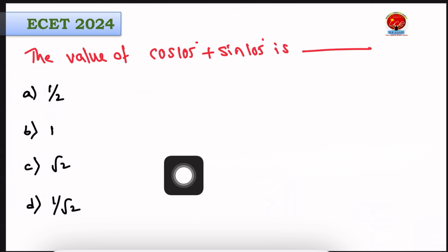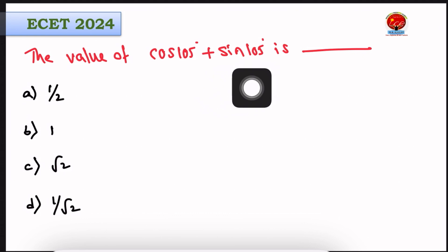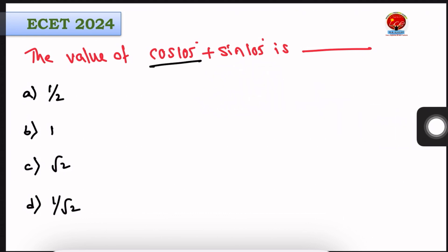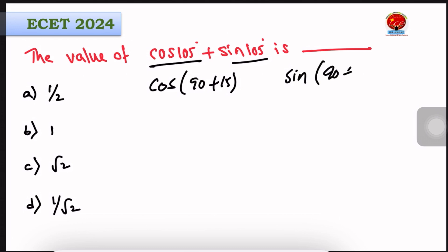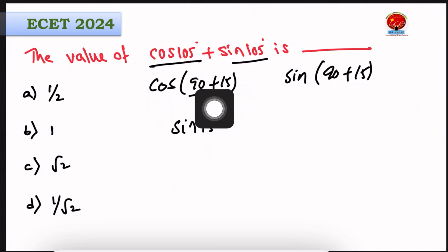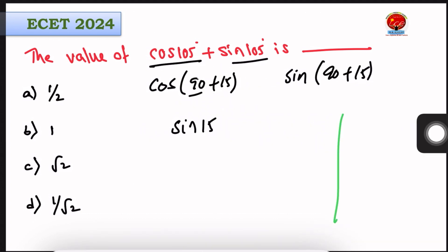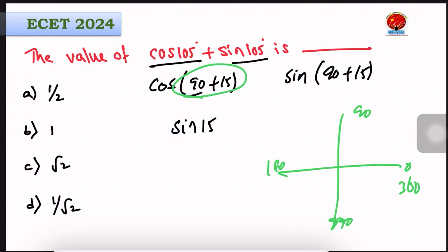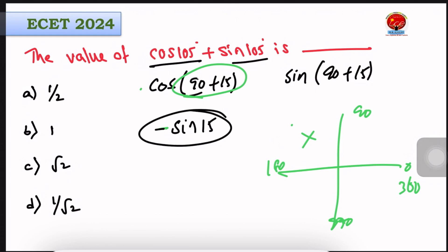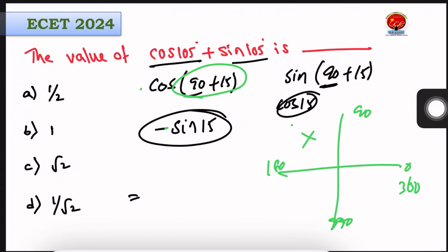Last question: find the value of cos 105 degrees plus sin 105 degrees. We can write cos 105 as cos(90 plus 15), which equals negative sin 15 degrees, since 90 plus 15 is in the second quadrant. Similarly, sin 105 equals sin(90 plus 15) equals cos 15 degrees.